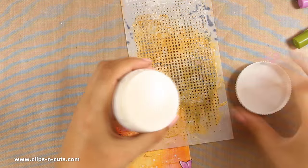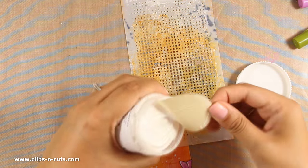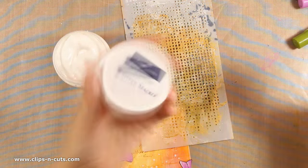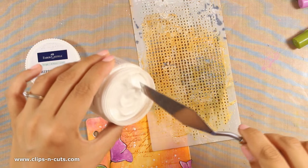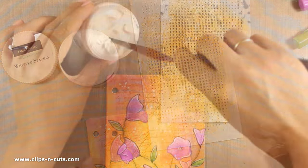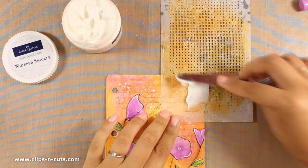Now time to do some stenciling. I have a fresh jar of whipped sparkle. This is a product by Faber-Castell. It's nice and thick and it's great for using it over stencils to create some dimensional details.